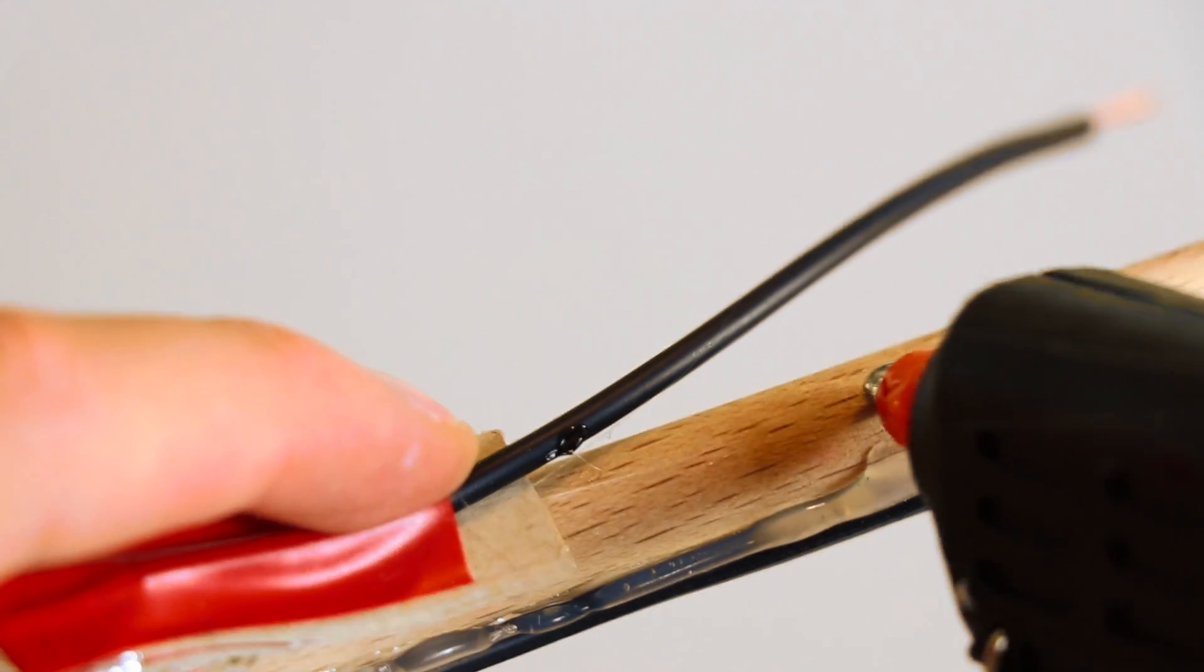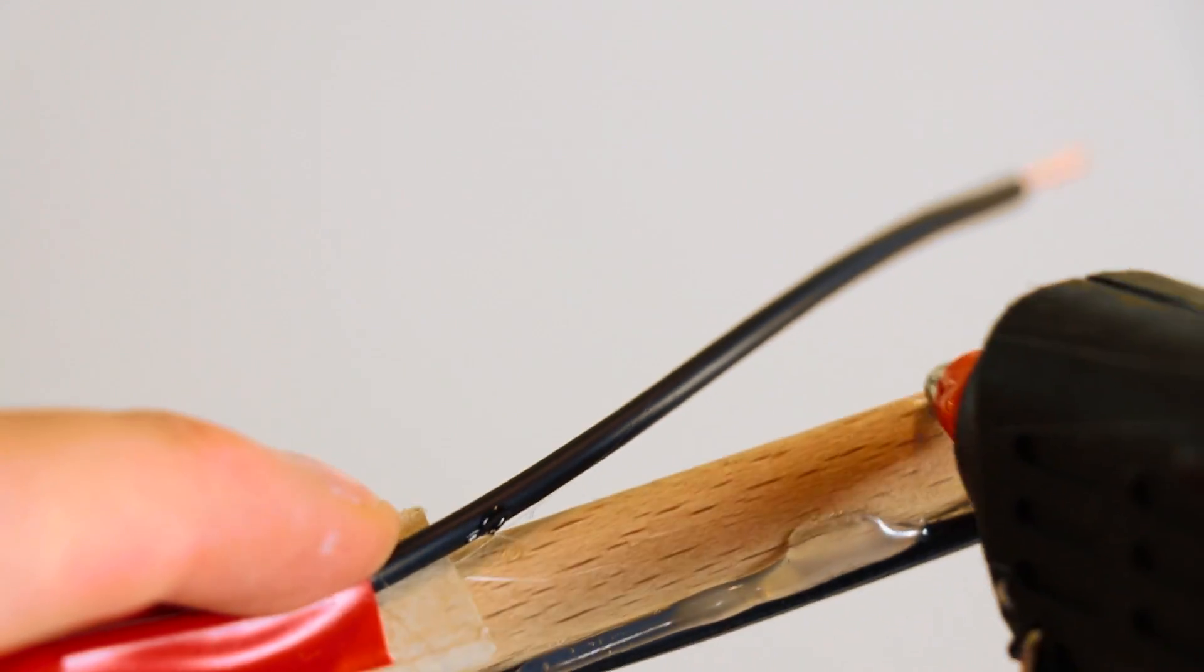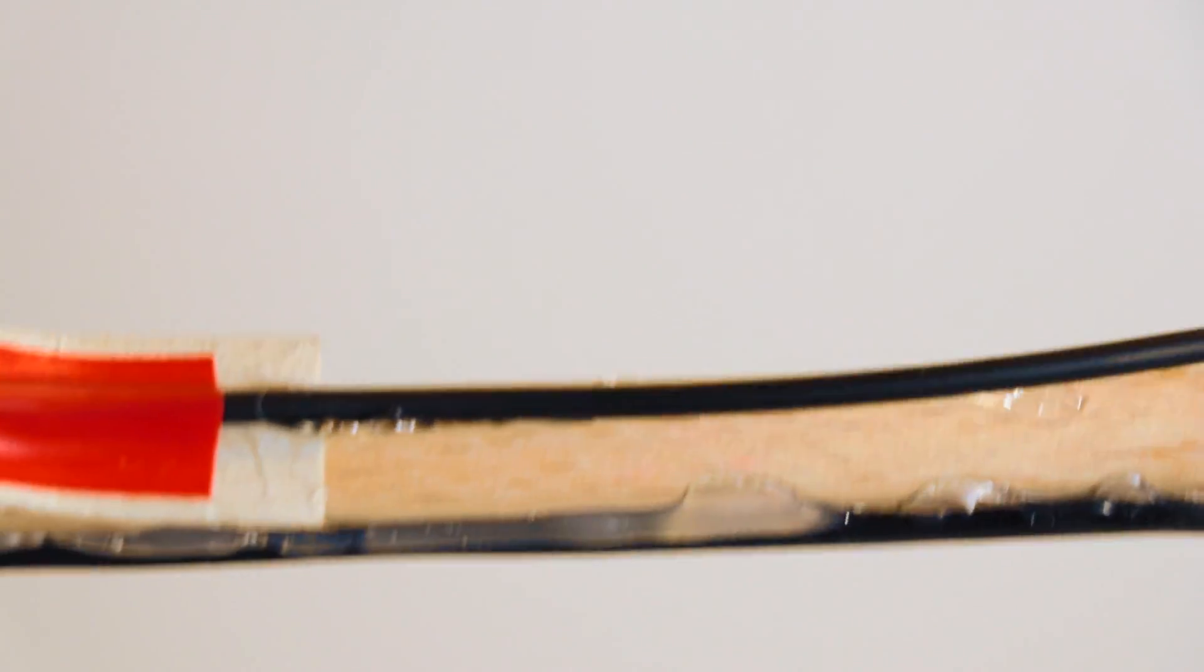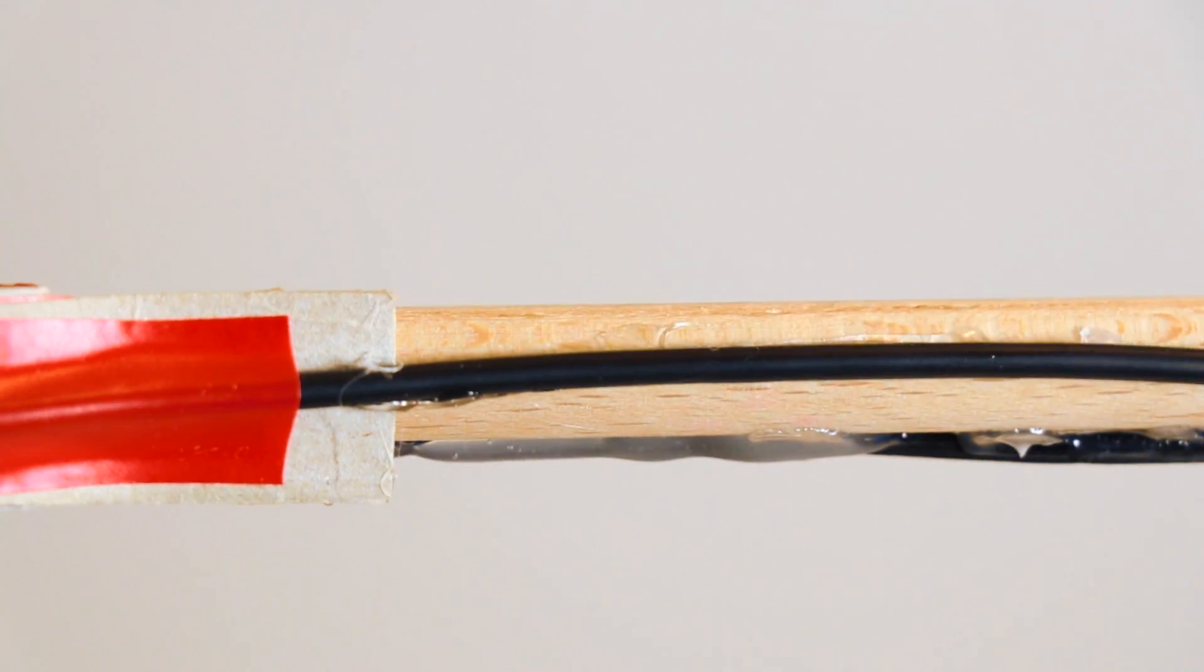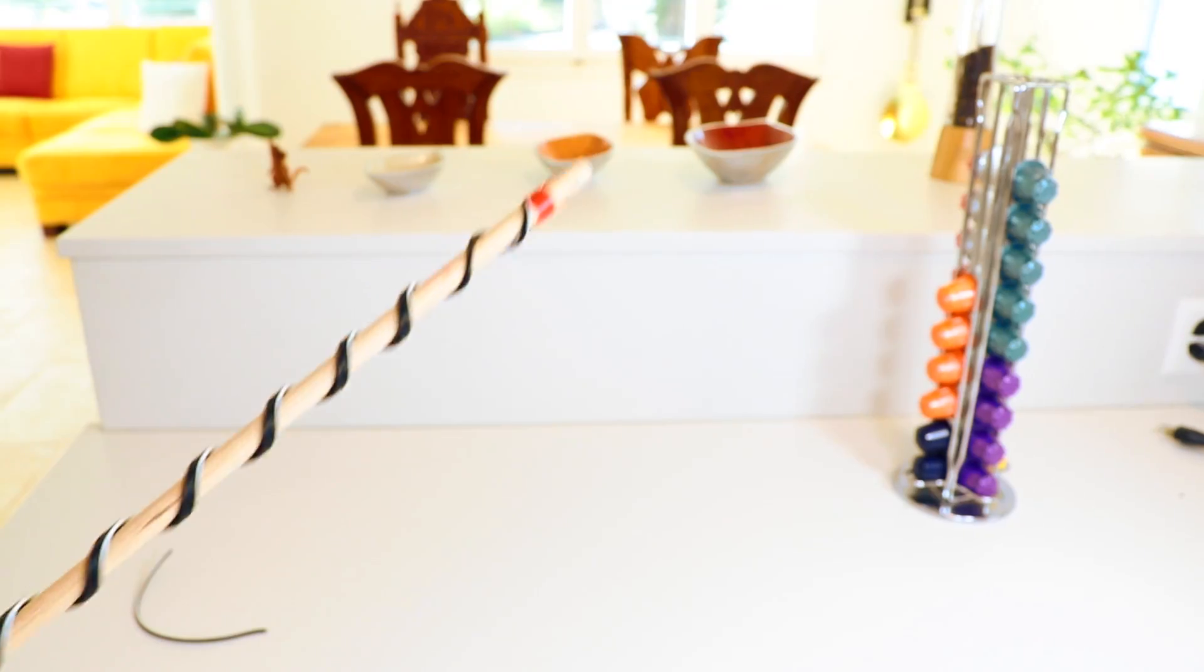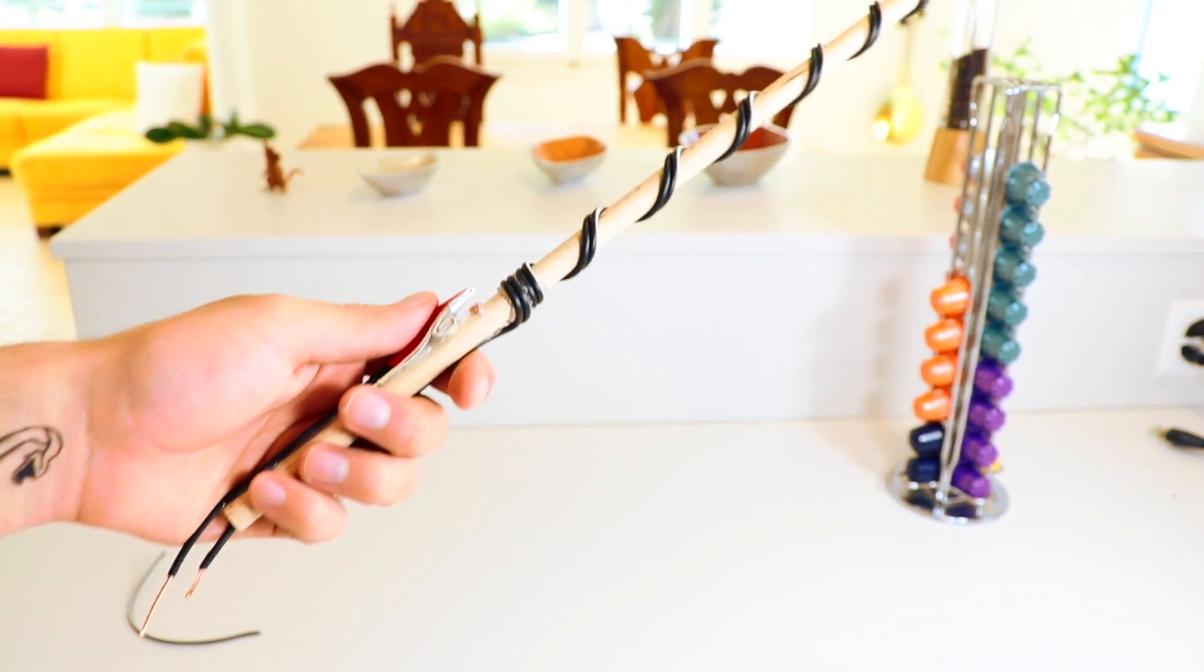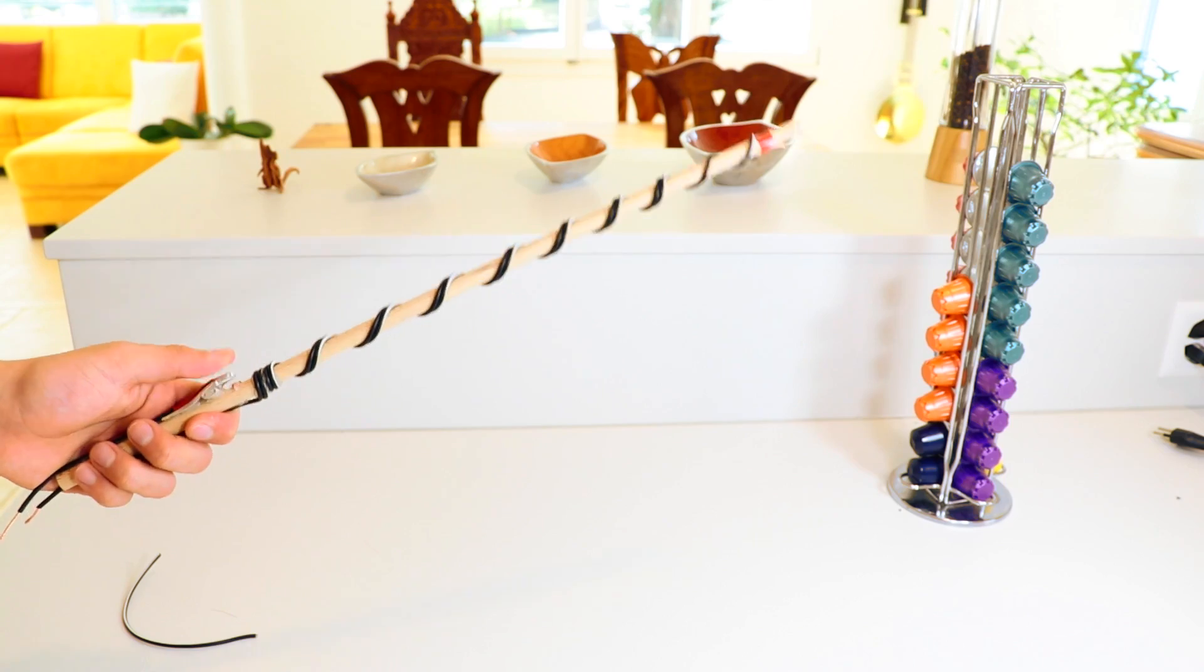Then secure the wire into place using a small line of hot glue. Make sure the aluminum bit can make contact with the exposed copper.